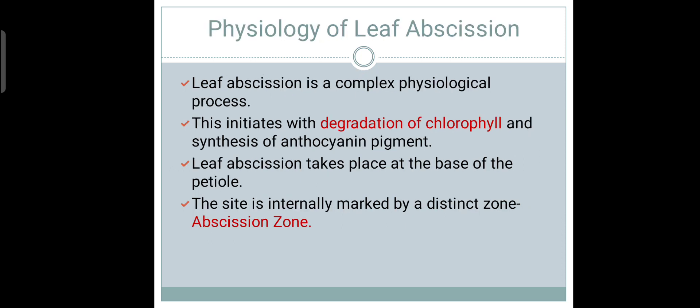Now we will see what is the physiology of Leaf Obsession. It is a natural phenomenon and Leaf Obsession is a complex physiological process. To understand this, let us take a look at what are the changes in plant physiology during the process of Leaf Obsession. This initiates with, first of all, degradation of chlorophyll pigment and synthesis of anthocyanin pigment.